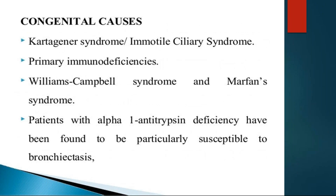Coming to the congenital causes: Kartagener syndrome, also known as Immotile Cilia syndrome; primary immune deficiencies like Job syndrome; Williams-Campbell syndrome; Marfan syndrome; and congenital enzyme deficiency like alpha-1-antitrypsin deficiency, which is also associated with bronchiectasis.